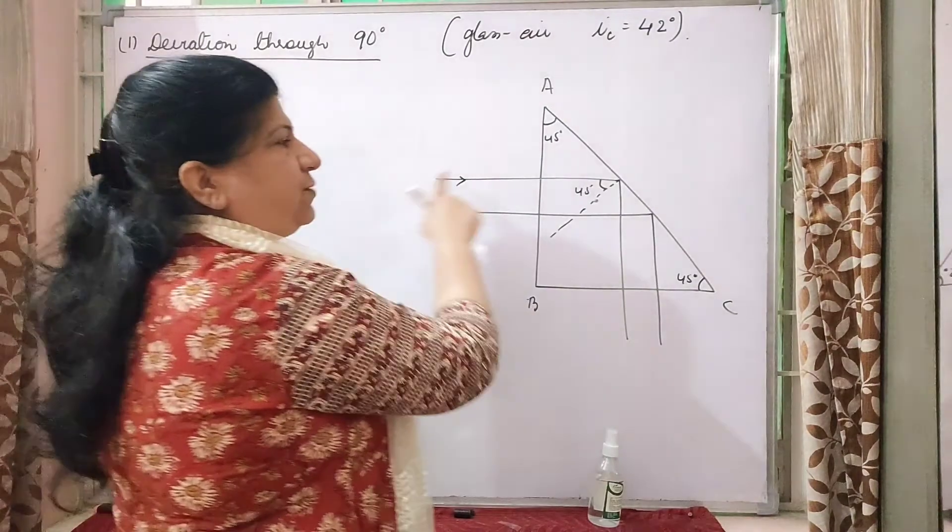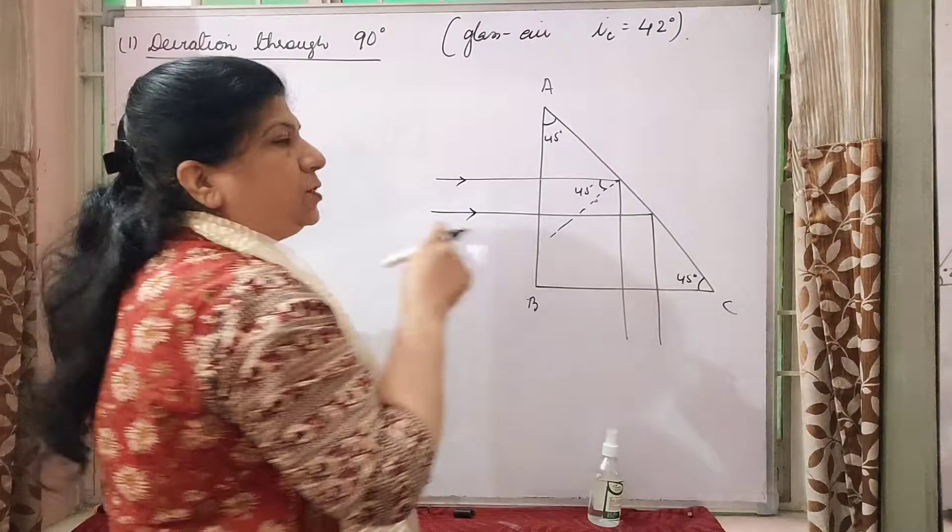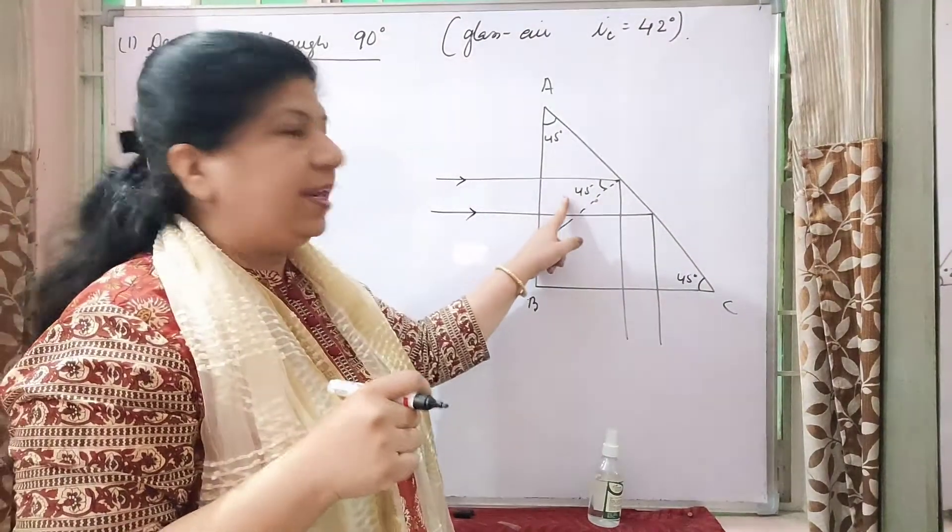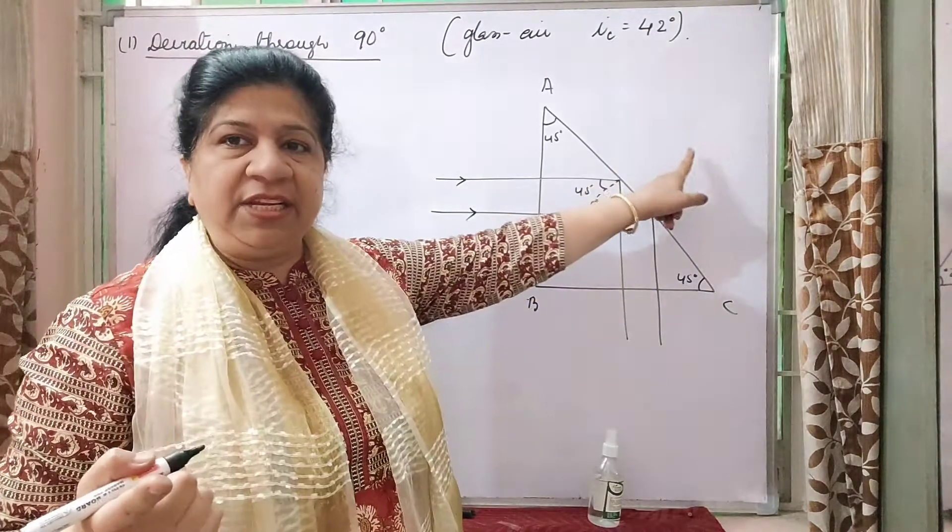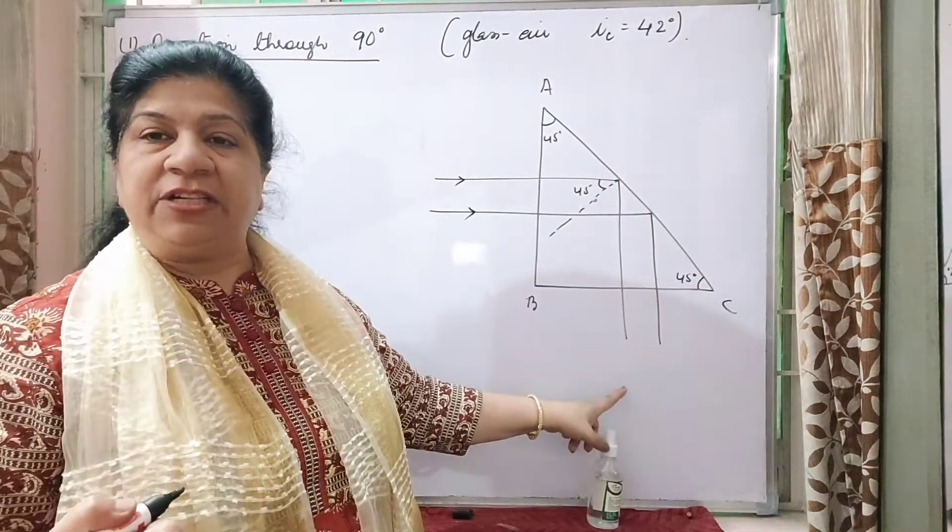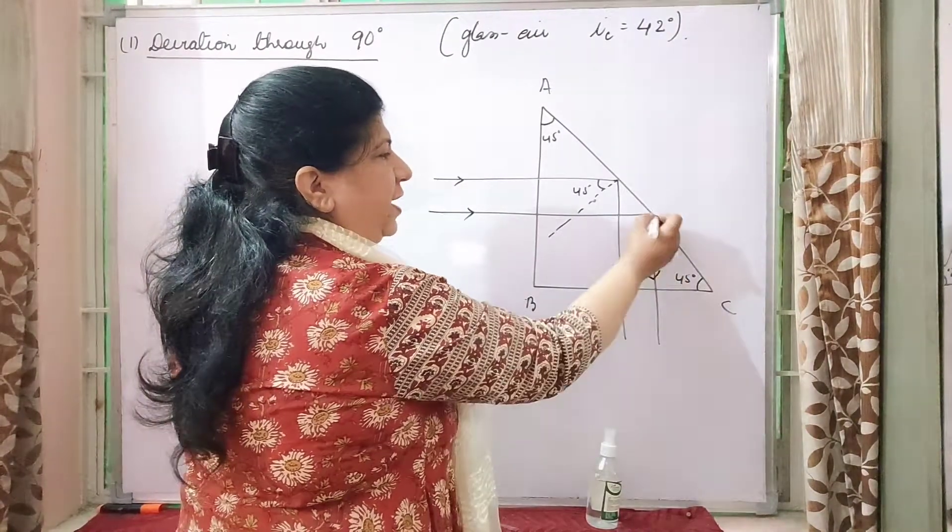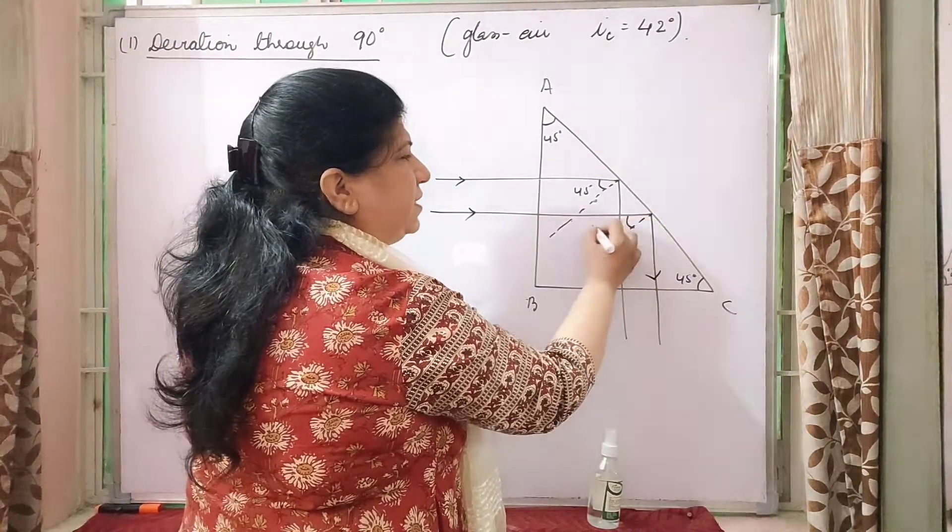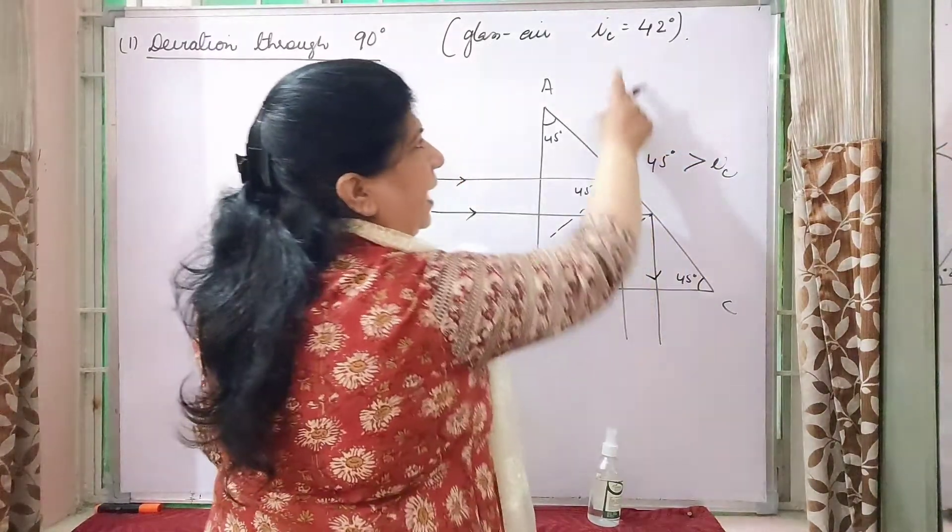So where it is 45 degree and the glass air critical angle is 42 degree. So the incident angle is greater than the critical angle and hence instead of refraction, total internal reflection is taking place. So this light ray is like this and this light ray is like this because the angle of incidence is 45 degree and 45 degree is more than the critical angle.